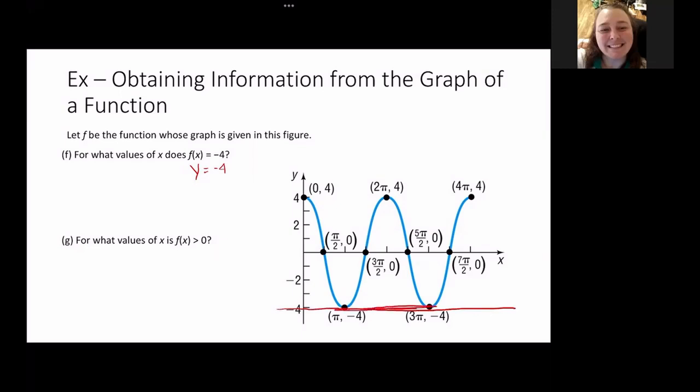If I draw the line y equals -4, I can see that it crosses here and it crosses there. So for what values of x, where x equals π and x equals 3π? Because what it's asking for is the value of x where y equals -4.